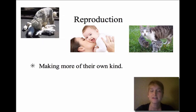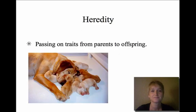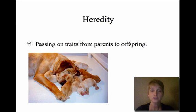Reproduction is making more of their own kind. All living things do this, whether they are humans, cats, dogs, plants, or sponges in the ocean — all living things have to reproduce. Heredity is closely tied to reproduction because heredity is passing on traits from parents to offspring. This is why oftentimes we see that the offspring looks a lot like the parent.